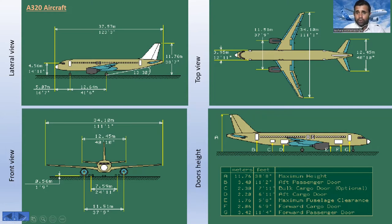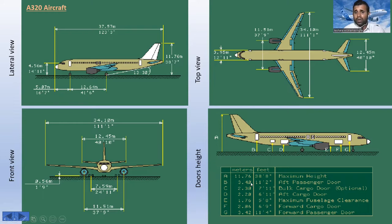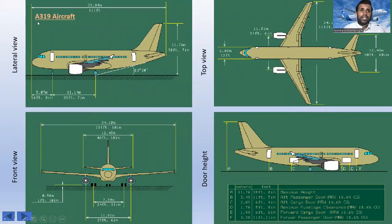The maximum height of the A320, from ground to top, is around 11.76 meters — that's approximately 38 feet 8 inches. The height from the ground to the passenger doors is around 3.40 meters. You can go through these dimensions to get a rough idea. Now let's go to the A319 aircraft.